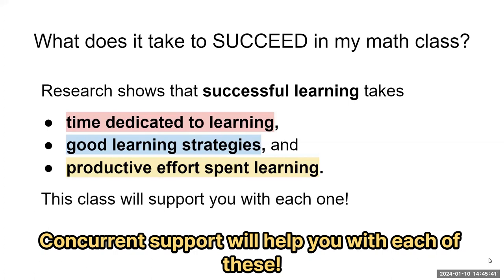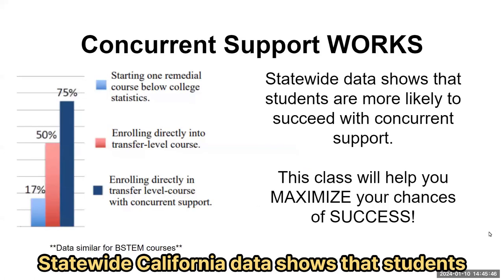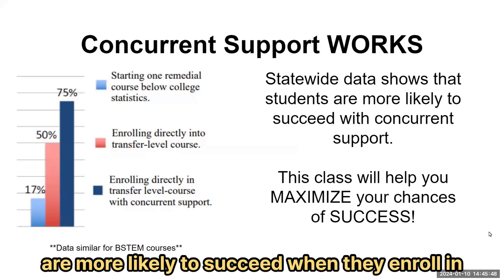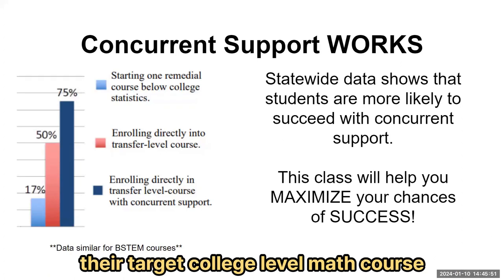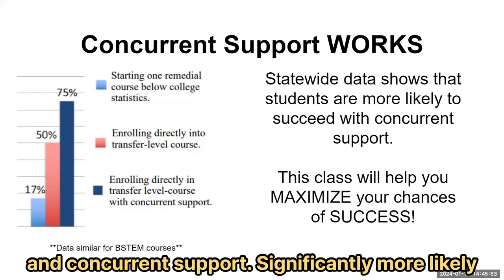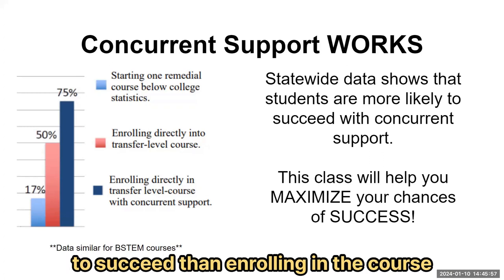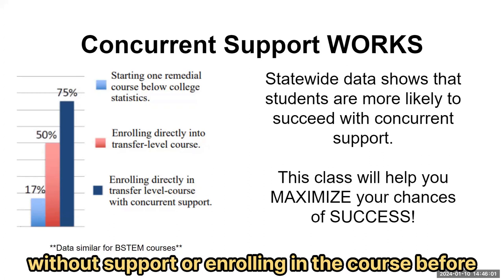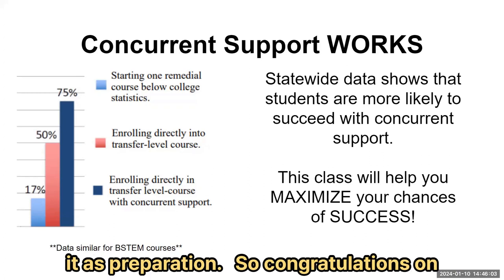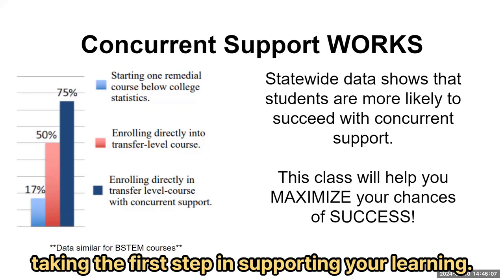Concurrent support will help you with each of these. Statewide California data shows that students are more likely to succeed when they enroll in their target college-level math course and concurrent support — significantly more likely to succeed than enrolling in the course without support or enrolling in the course before as preparation. So congratulations on taking the first step in supporting your learning.